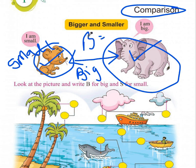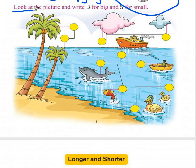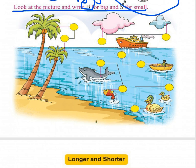Toh baccho, aapke saamne yeh question diya gaya hai: look at the picture and write B for big and S for small. Neeche diye gaye picture mein se jo bhi cheezein badi hain unke liye hume likhna hai B, aur jo cheezein choti hain unke liye likhna hai S — in the given yellow circles.